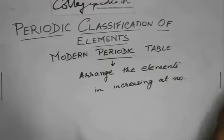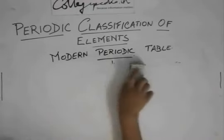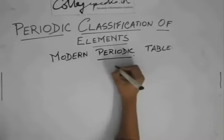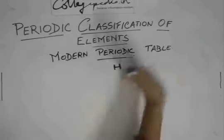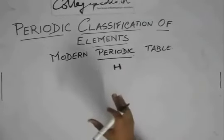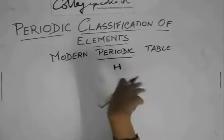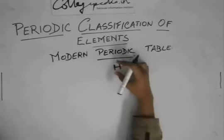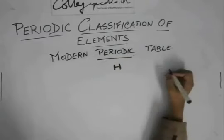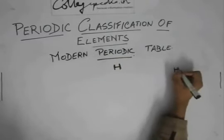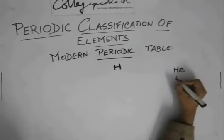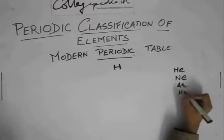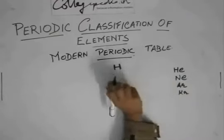But modern periodic table applies this law in a slightly different way, so that the properties come together. What it does? In the modern periodic table, hydrogen is placed separate. It is like hanging above the periodic table. It does not belong to the periodic table. Then there are the noble gases: helium, neon, argon, krypton.